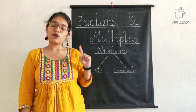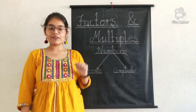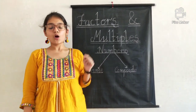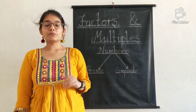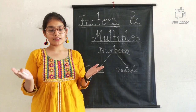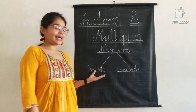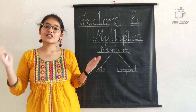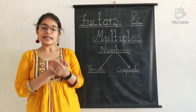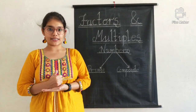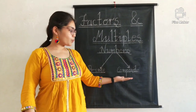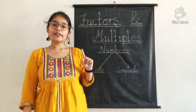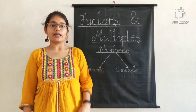For example, 2 has only 2 factors: 1 and 2. Similarly, 5 also has only 2 factors: 1 and 5. And 13 also has only 2 factors: 1 and 13. Numbers which have only two factors are known as prime numbers. These numbers are not made by any other number's multiplication. This is why they are called prime, or important, numbers.